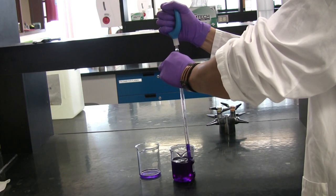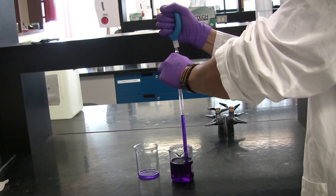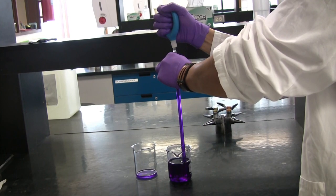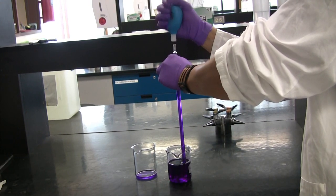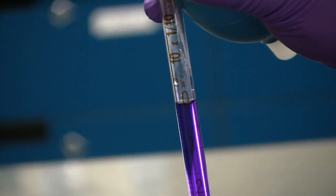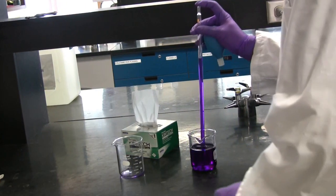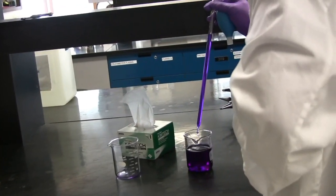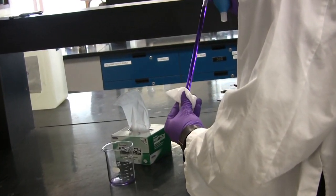Start off using your pipette bulb to withdraw your solution into the graduated pipette. Make sure to stop at exactly the zero point, as indicated here. Next, take it out of the solution and wipe off the excess with a kim wipe.